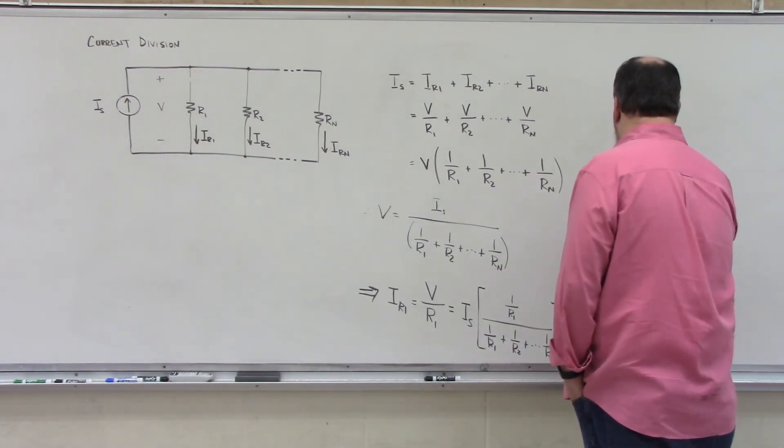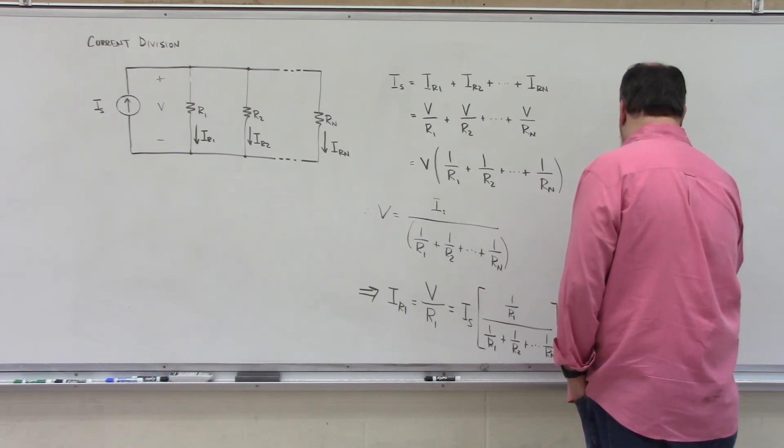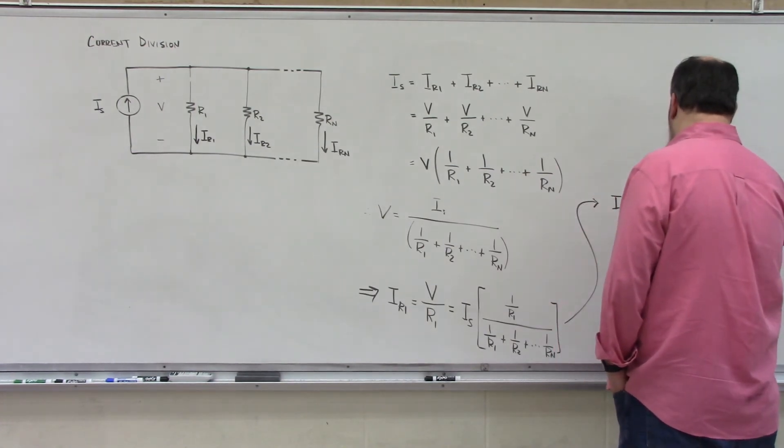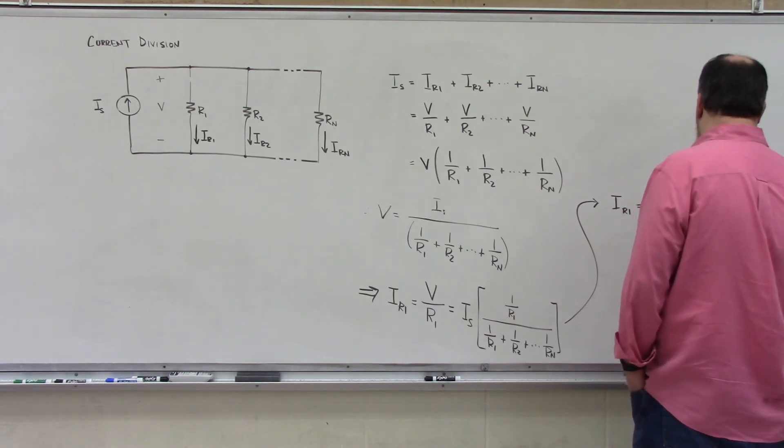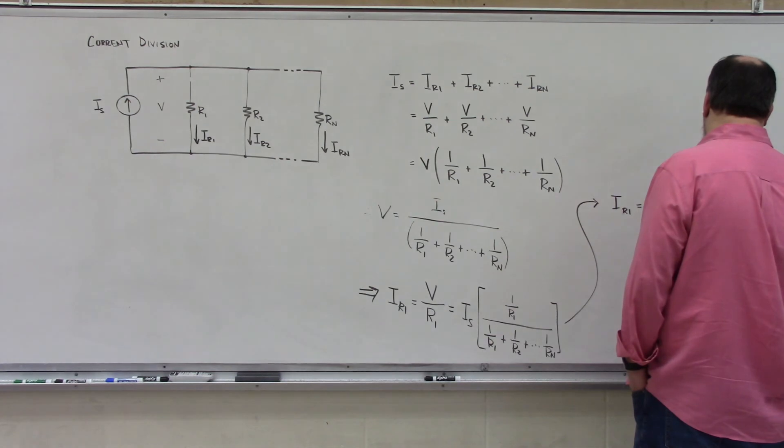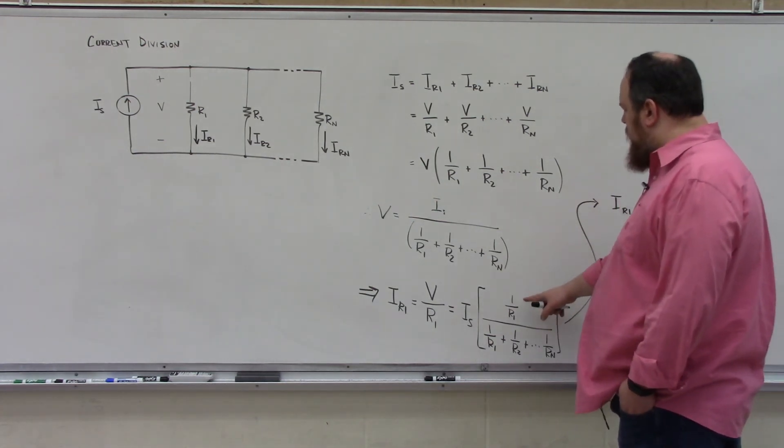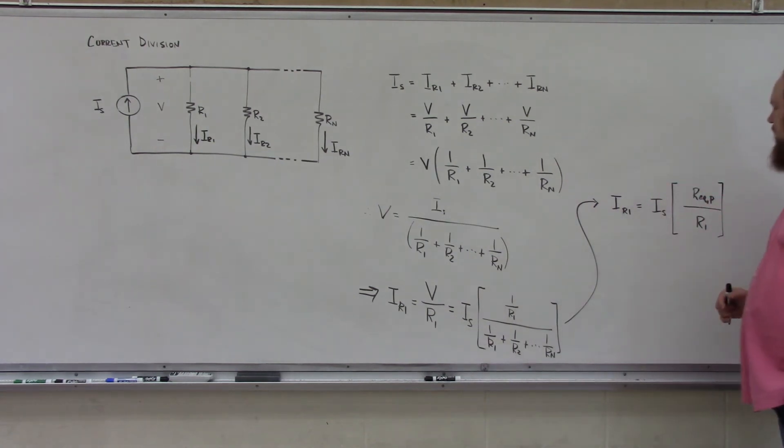So this looks like IR1 is simply equal to IS multiplied by the equivalent parallel resistance, REQ P, and now we're bringing this factor of 1 over R1 back in, which puts R1 in the denominator, and there we go.